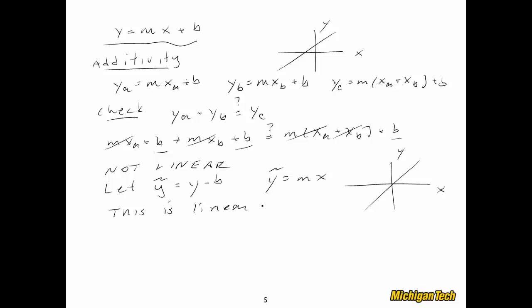This was a very formal approach to checking linearity, but we can also do it by inspection. If a differential equation has constant or time-varying coefficients of the dependent variables with terms like x triple dot, x double dot, x, y, or u, the system is linear. But if you have terms like x squared, y cubed, or sine of u, the system is nonlinear — though a substitution might make it linear.